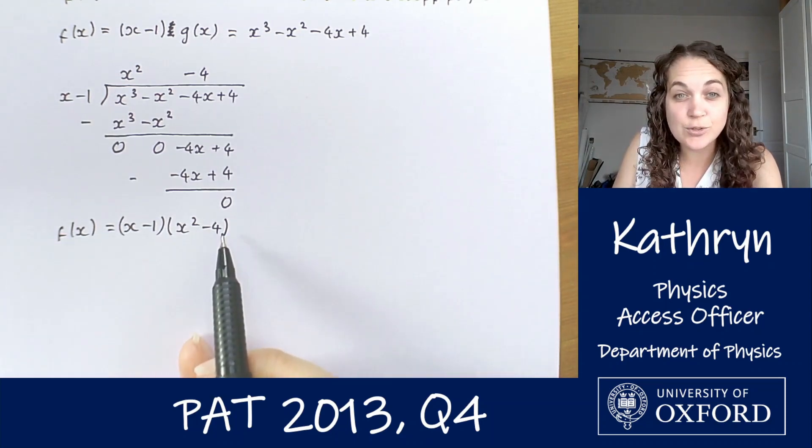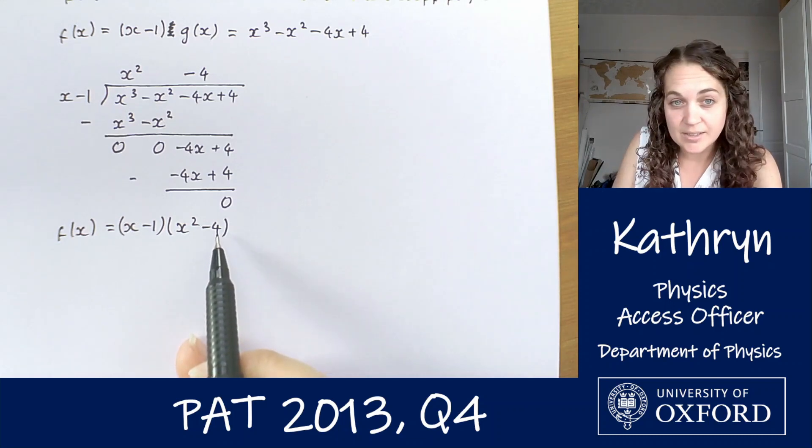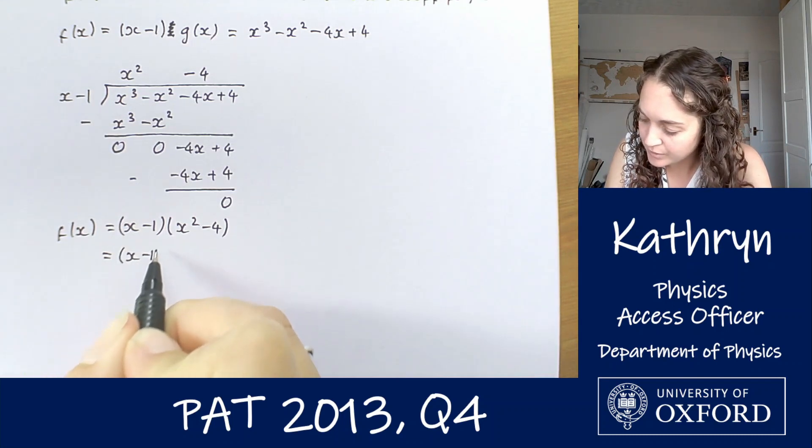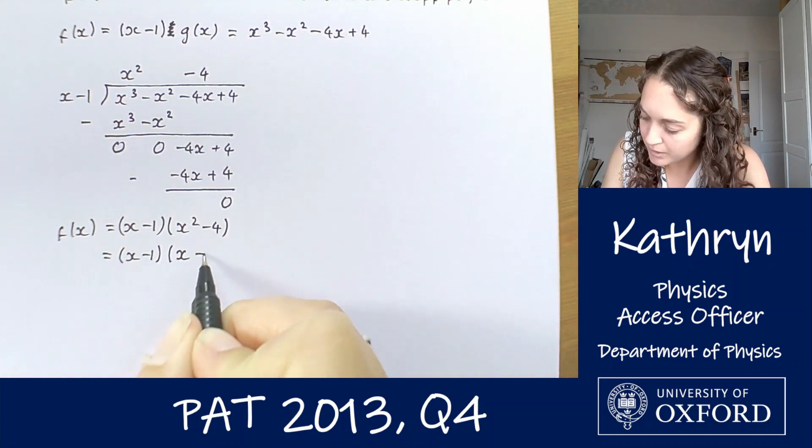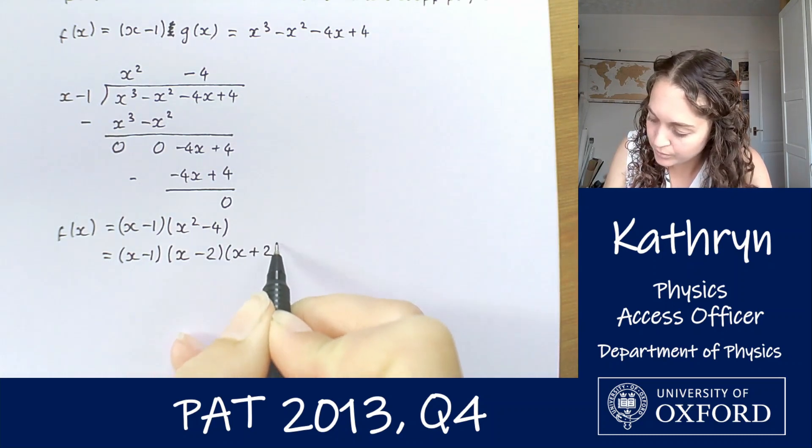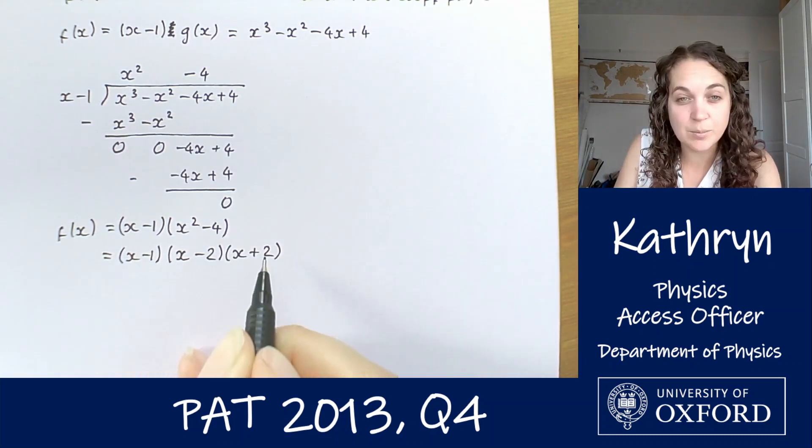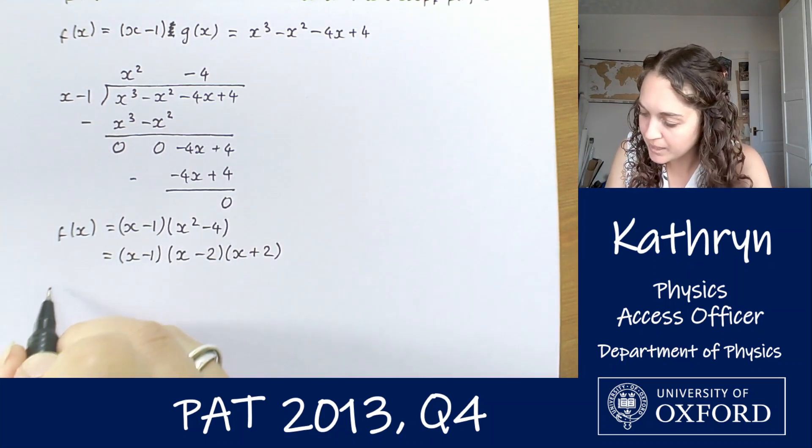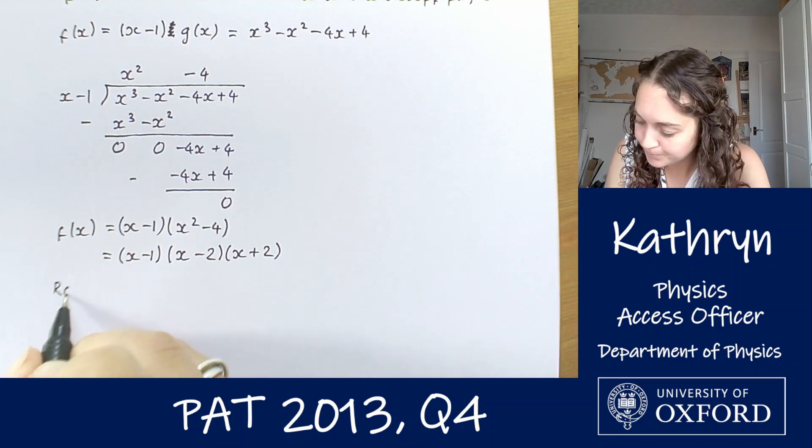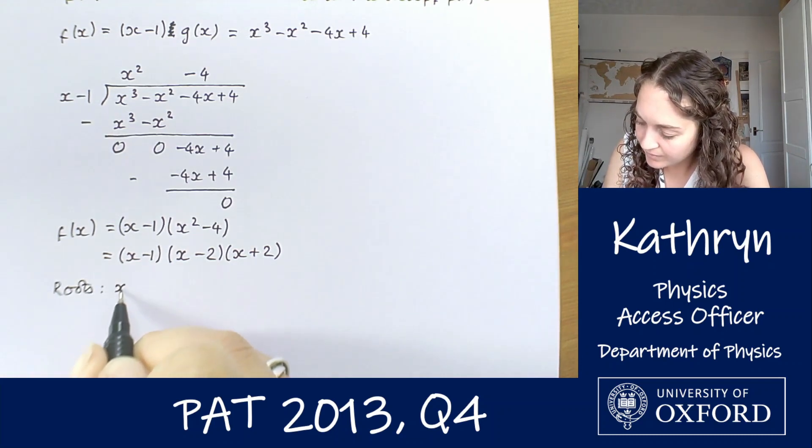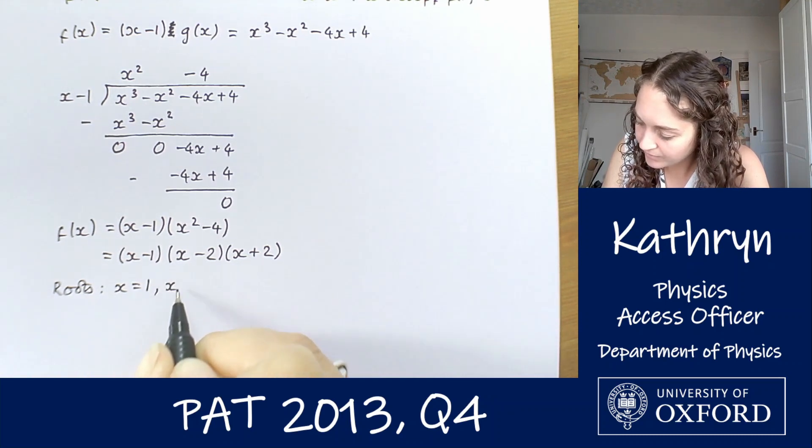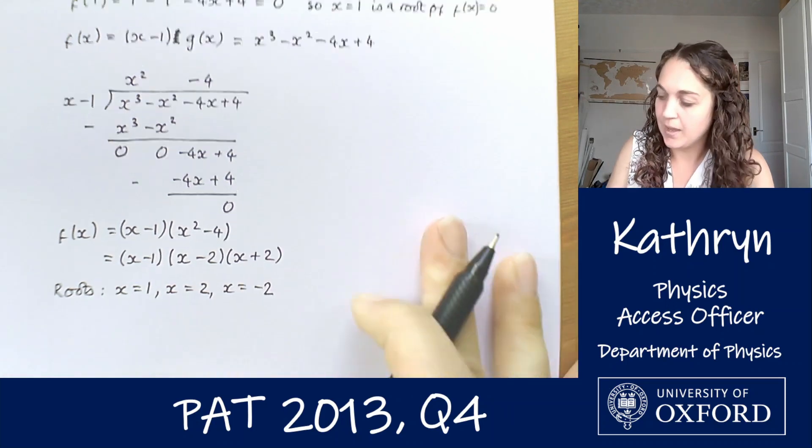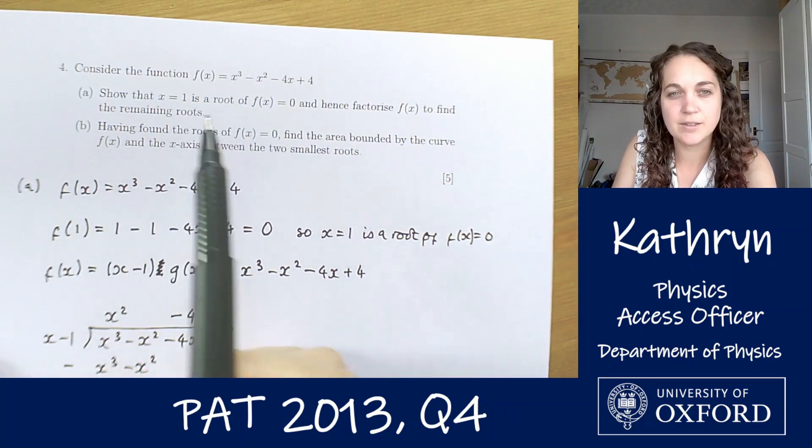This is the difference of two squares. We've got x squared and we've got 2 squared. So that means we can factorize this as x minus 1 times x minus 2 times x plus 2. Because if we multiply those two brackets, the second with the third, we will get that x squared minus 4. So that means that the roots are x equals 1, x equals 2, and x equals minus 2. And that is exactly what the question had asked us to find.